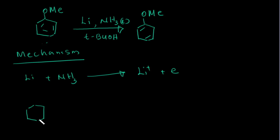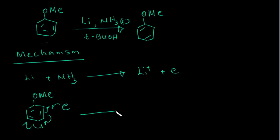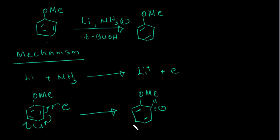Now we have a solvated electron in our reaction. With methoxybenzene as our substrate, this solvated electron attacks the benzene ring in a radical-type reaction. As a result of this step, we get a radical anion — we still have the existing hydrogen on the ring, and we have formed this radical anion.